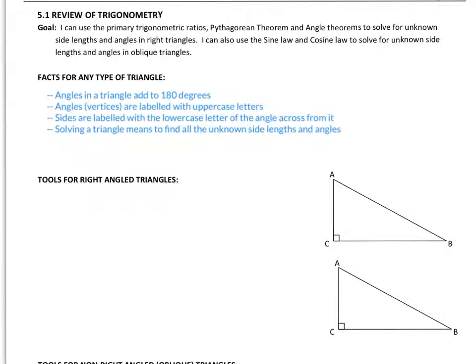First, we're starting with some facts that are true for any type of triangle. Angles in a triangle have to add up to 180 degrees whether it's right angled or not - all three angles add together to be 180 degrees.